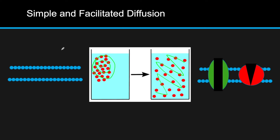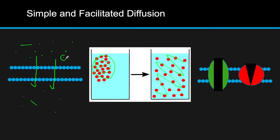Simple diffusion occurs when we have a very high concentration of non-polar molecules outside of the cell and a very small amount inside. By random movement, these molecules are going to move across the membrane from high concentration to low concentration. These particles must be non-polar, because if they're too big or they're not non-polar, they won't be able to cross the membrane.